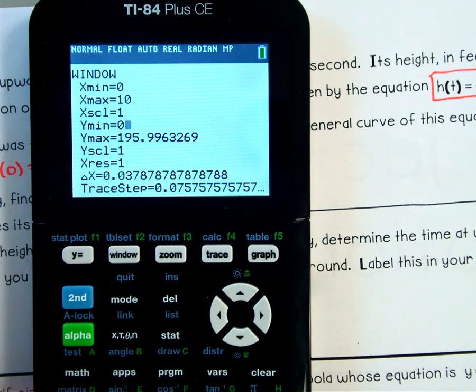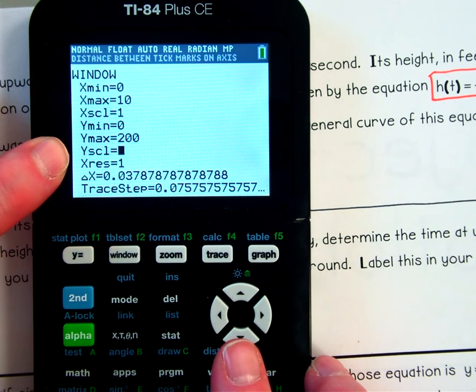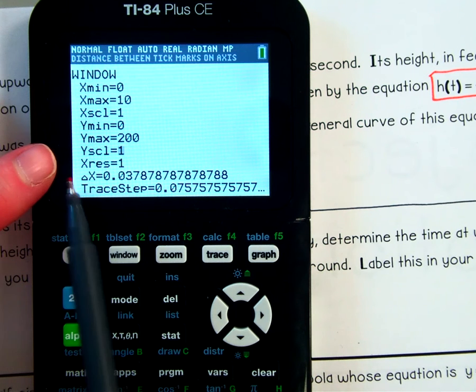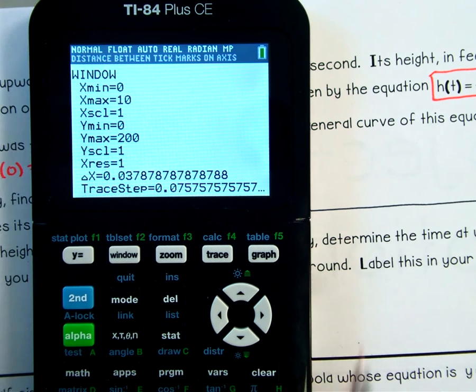So my y min, I want to be 0. All right? And then I don't like to have decimals. So I'm just going to change my y max to 200. Again, if 200 is not good, then I will change it. Okay? So then y scale, that's what this stands for right here where my little blinky guy is. Y S C L. That stands for y scale. This means it's going up by 1. So since my y is from 0 to 200, this would put 200 different little tick marks on my y-axis, which I don't want. So I'm going to change that to be 20. So that means each little mark on my y-axis is going to represent 20.